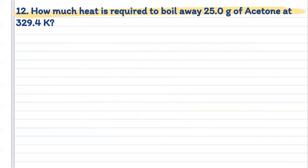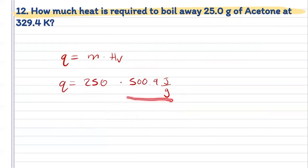For number 12, we want to know how much heat is going to be required to boil away 25.0 grams of acetone at 329.4 Kelvin. Heat is just my mass times my heat of vaporization for acetone. We know the mass, and we know our heat of vaporization for acetone from the table. Plugging those numbers in, we get 12,500 joules.